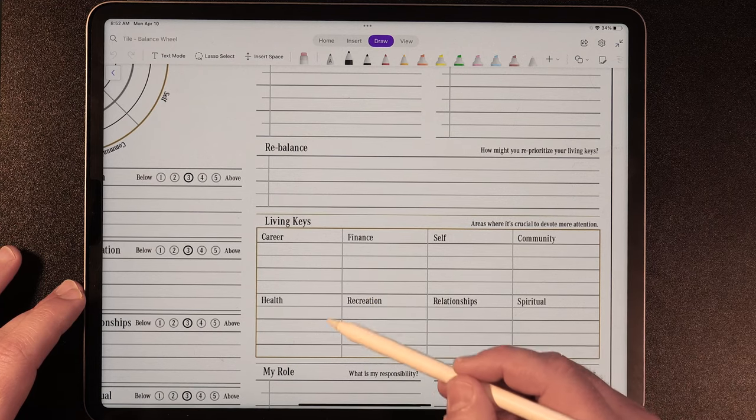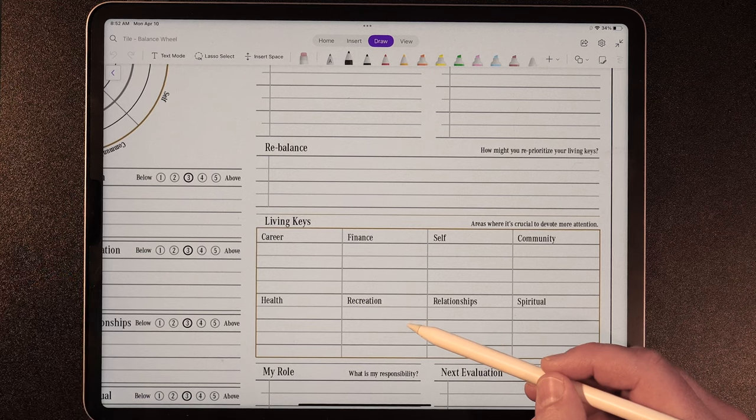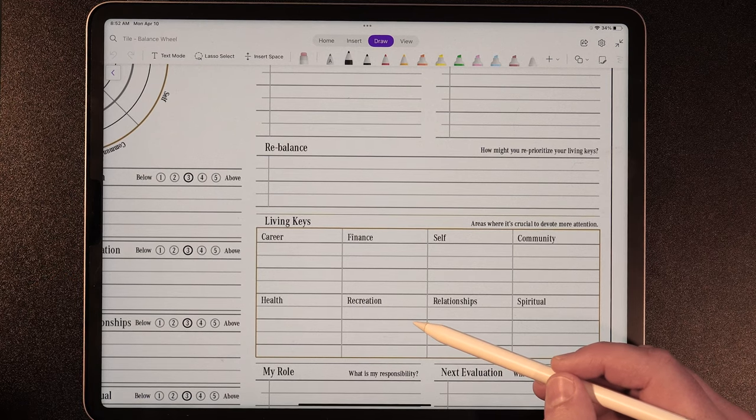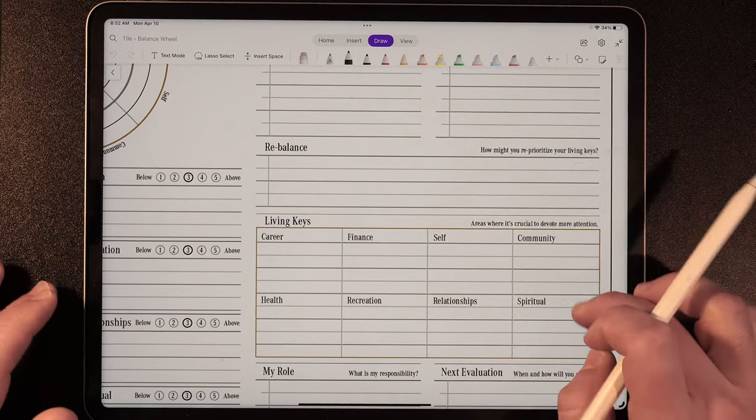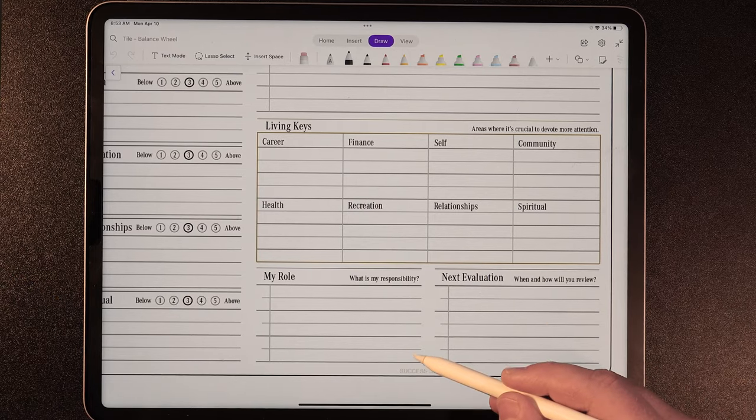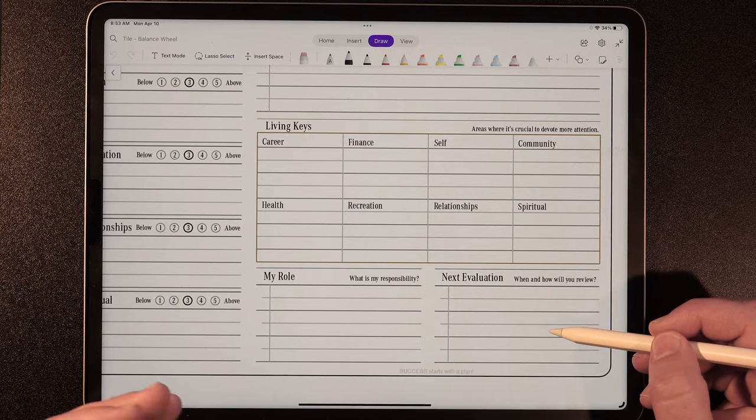And then here, we're going to establish key living goals. I want you to set a handful of key living goals in each category that you can start to implement into your weekly planning.